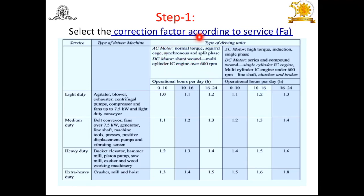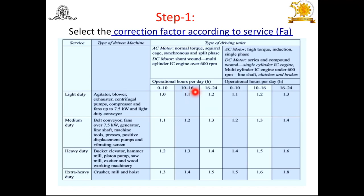Based on the type of driving units and load conditions — normal or heavy — we determine which drives are used to run the different machines using a V-belt drive. For example, if the drive is a centrifugal pump for a light duty application, service is required 10 to 16 hours per day, and it is run by a motor at normal torque, then the correction factor FA is 1.1.